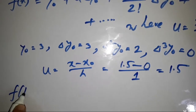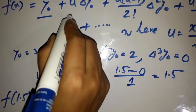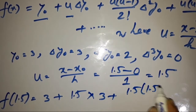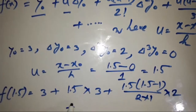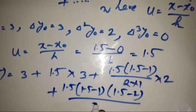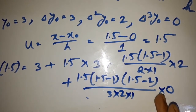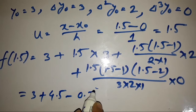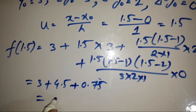Now f(1.5) = y₀ + u·Δy₀ + [u(u−1)/2!]·Δ²y₀ + [u(u−1)(u−2)/3!]·Δ³y₀ = 3 + 1.5×3 + [(1.5×0.5)/(2×1)]×2 + [(1.5×0.5×(−0.5))/(3×2×1)]×0. The last term cancels because Δ³y₀ = 0. So the result is 3 + 4.5 − 0.75 = 8.25.